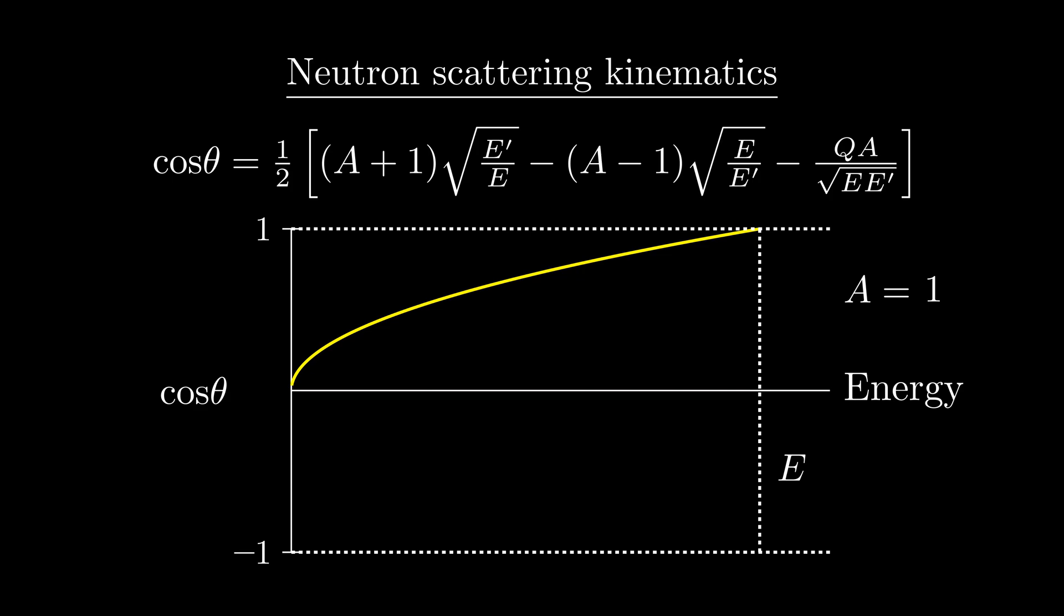Another interesting thing to note here is that the cosine of the scattering angle cannot be negative, which means that the neutron can't back-scatter off a proton under any circumstance. So let's plot this curve again, but this time for a heavier target.